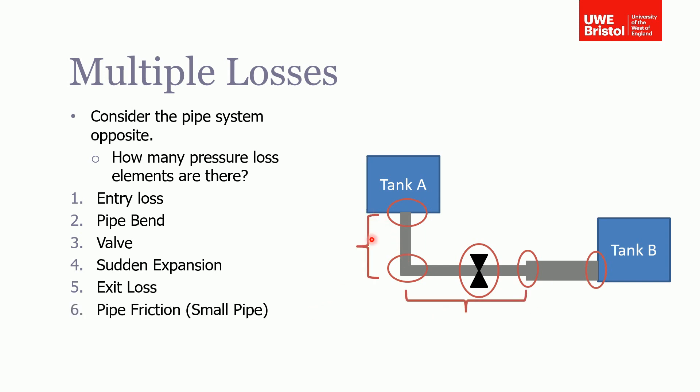But also, on top of that, these are the minor losses, but we also have the pipe friction, so we have to do that separately for different velocities—for the smaller diameter pipe and the friction in the larger diameter pipe.